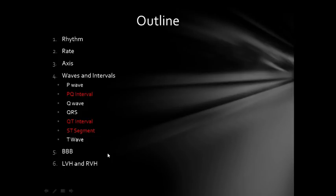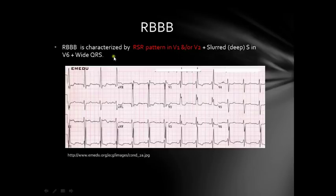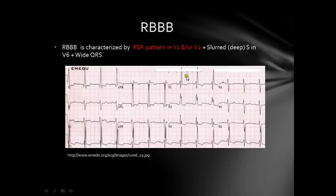To conclude, you can also check for bundle branch block and hypertrophies. A bundle branch block means a block in either the right or left bundle branch — the left bundle branch has three branches: the posterior fascicle, anterior fascicle, and septal fascicle. Right bundle branch block is most characteristically identified by the RSR' pattern in V1 and/or V2 — you can see the RSR' pattern in V2 and V1, meaning you get two R waves. There is also a deep S wave in V6, but the most important sign is the RSR' pattern in V1 or V2.